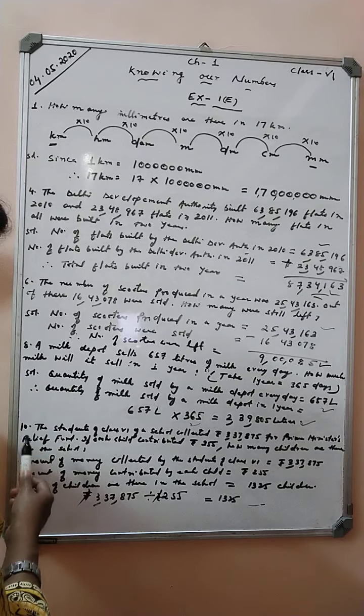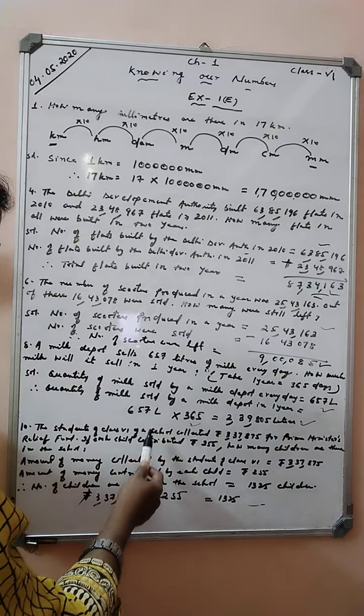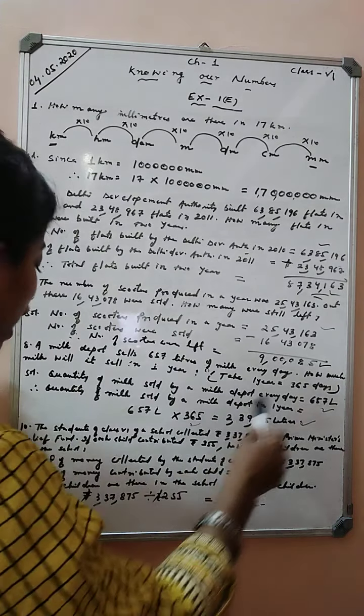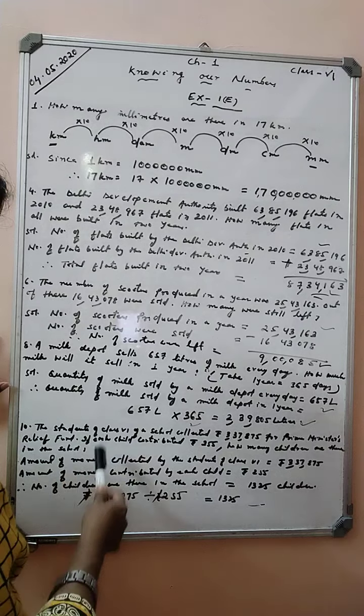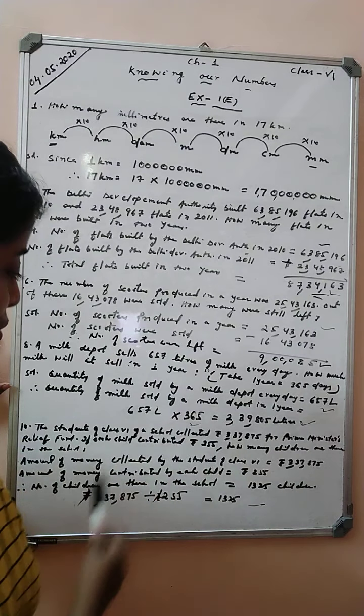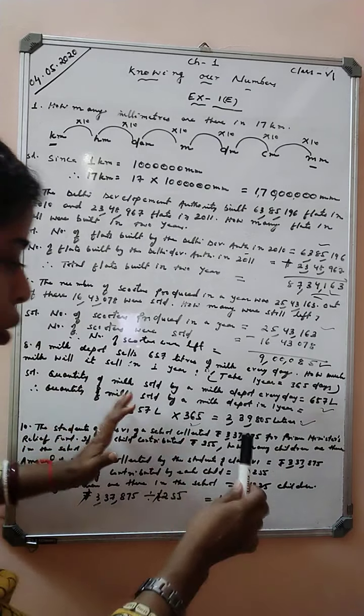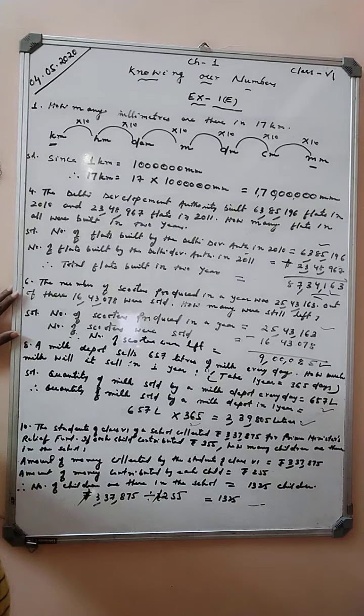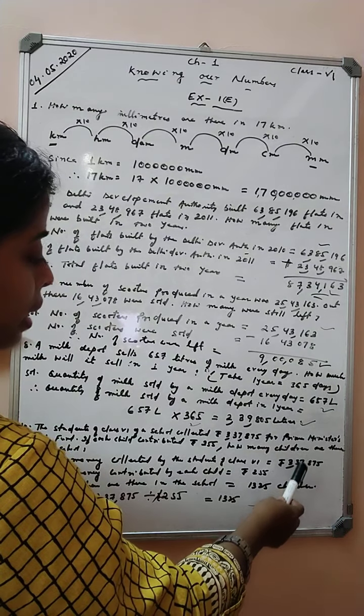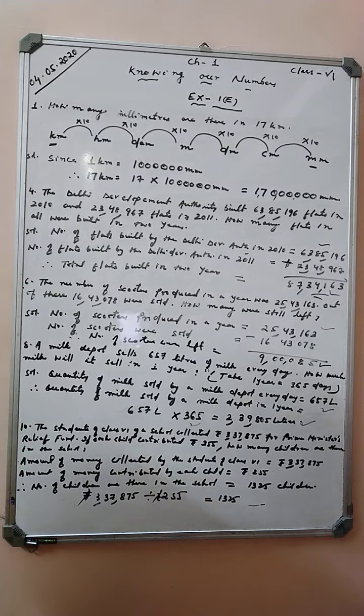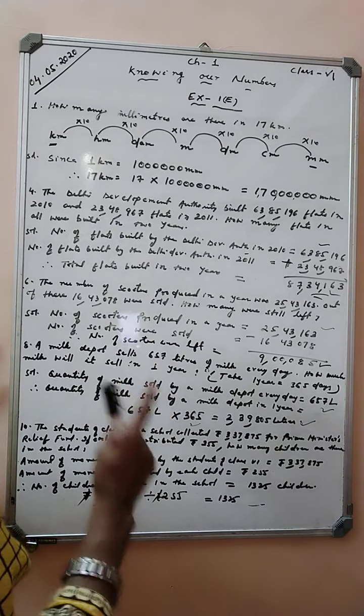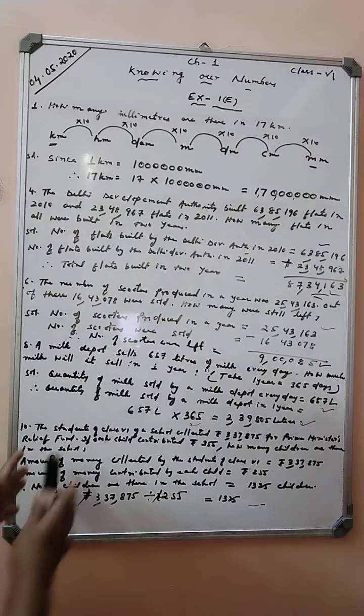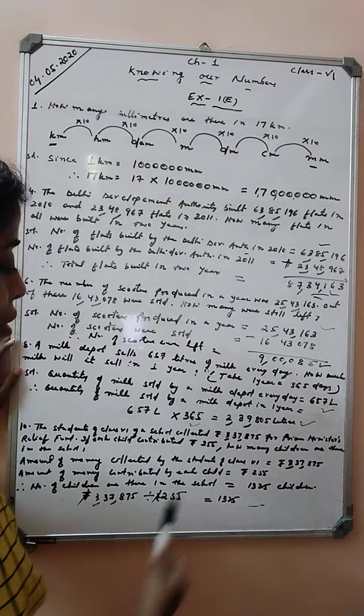Next question. The students of class 6 of a school collected rupees 3,37,875 for Prime Minister's Relief Fund. If each child contributed rupees 255, how many children are there in the school? Amount of money collected: 3,37,875. Amount contributed by each child: rupees 255. How many students were there? We have to divide.